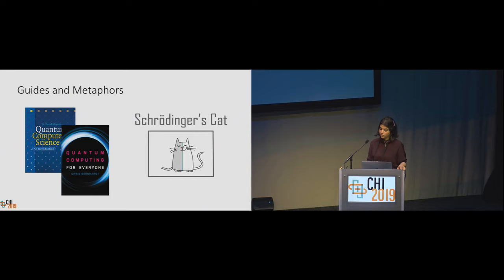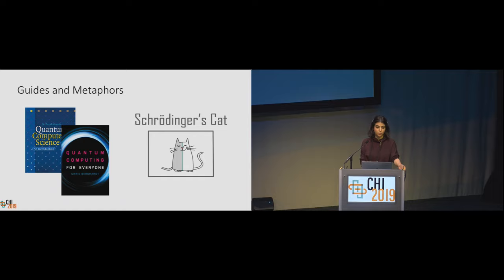Over the last decade, there has been an emergence of introductory books intended for general audiences. Additionally, institutions like IBM, D-Wave, and Microsoft provide introductory tutorials for beginners to quantum computing. Another approach to teach principles of quantum computing is via metaphors. Schrödinger's cat explains the concept of superposition via thought experiment: a cat is kept in a box with a bottle of poison and is simultaneously dead and alive because it is unknown whether the cat drank the poison. For HCI researchers, there is an opportunity to evaluate the extent to which these guides and metaphors teach beginners about quantum computing.